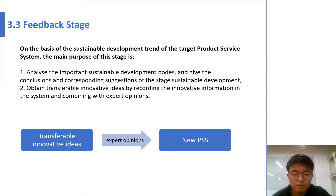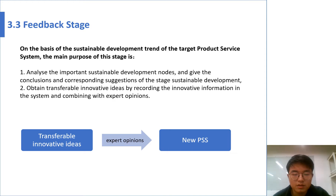On the basis of the sustainable development trend of the target PSS, the main purpose of the feedback stage is twofold: on one hand, to analyze the important sustainable development laws and give conclusions and corresponding suggestions for the stage's sustainable development; on the other hand, to obtain transferable innovative ideas by observing and recording the innovative information in the system and combining with expert opinions.